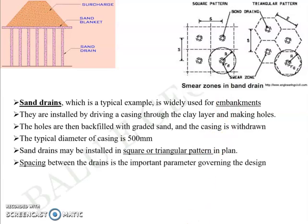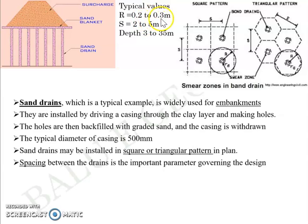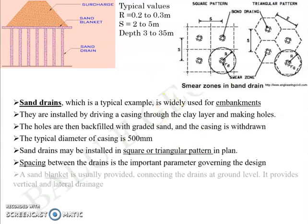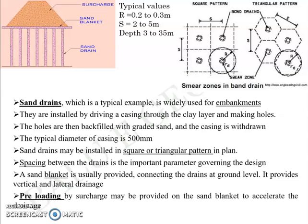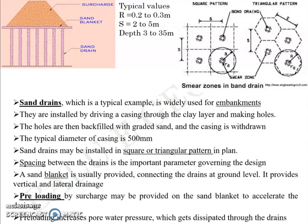The spacing between sand drains is an important design parameter — the closer the spacing, the smaller the smear zone for each drain. Typical values are: drain radius r of 0.2 to 0.3 meters, spacing S of 2 to 5 meters, and depth ranging from 3 to 35 meters depending on site conditions and expected load. A sand blanket is provided connecting the drains at ground level, providing vertical and lateral drainage. A surcharge or pre-loading may be added on the sand blanket to further accelerate drainage by increasing pore water pressure and squeezing water out through the drains.